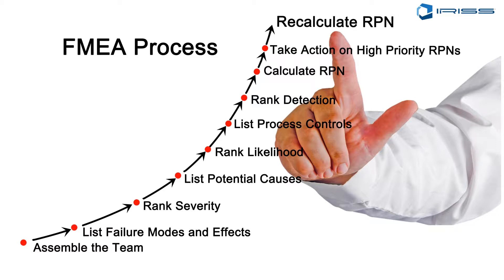You assemble a cross-functional team and look at the critical pieces of the electrical and electromechanical infrastructure. You list the possible modes of failure, the ways in which things can fail, and what the impact of a failure on each piece of equipment would be. You go through a ranking and severity exercise — would it cause 10% or 100% of the facility to be impacted? What are the safety implications? What are the environmental implications, such as a discharge of untreated wastewater? All of these things go into a rank severity exercise in the RPN process.